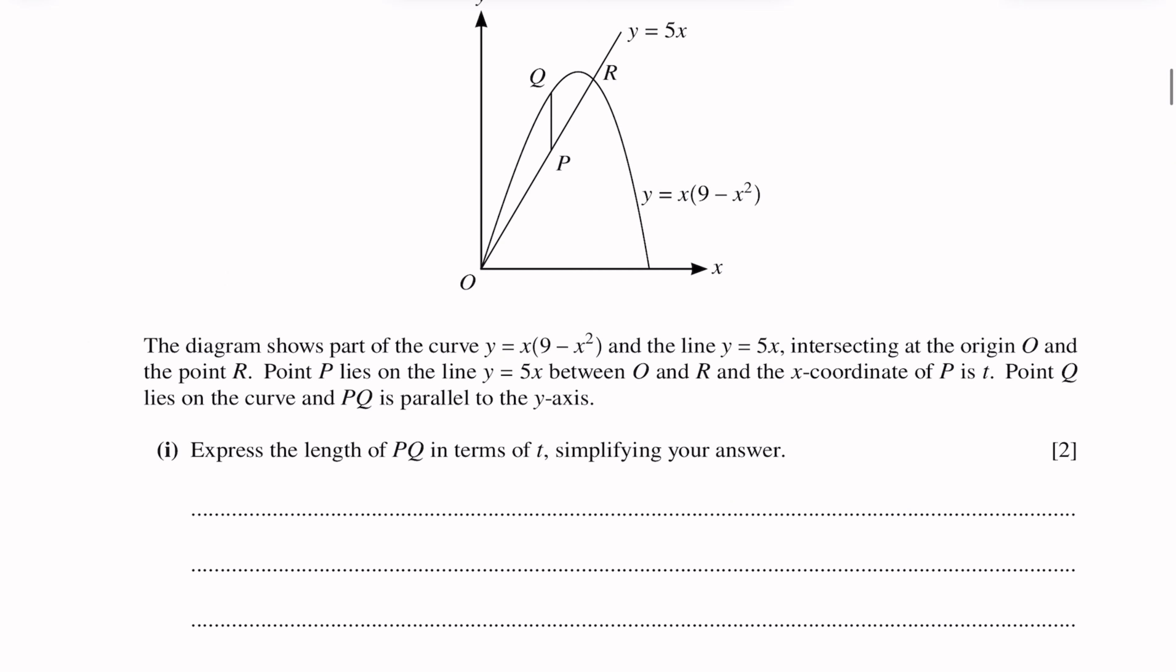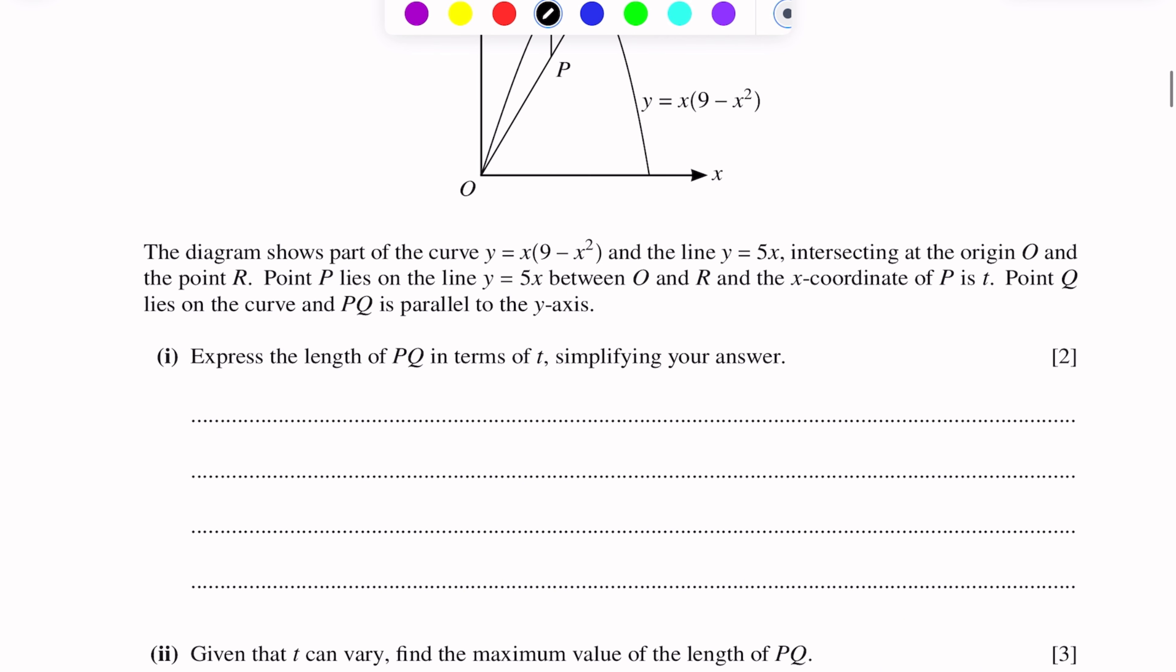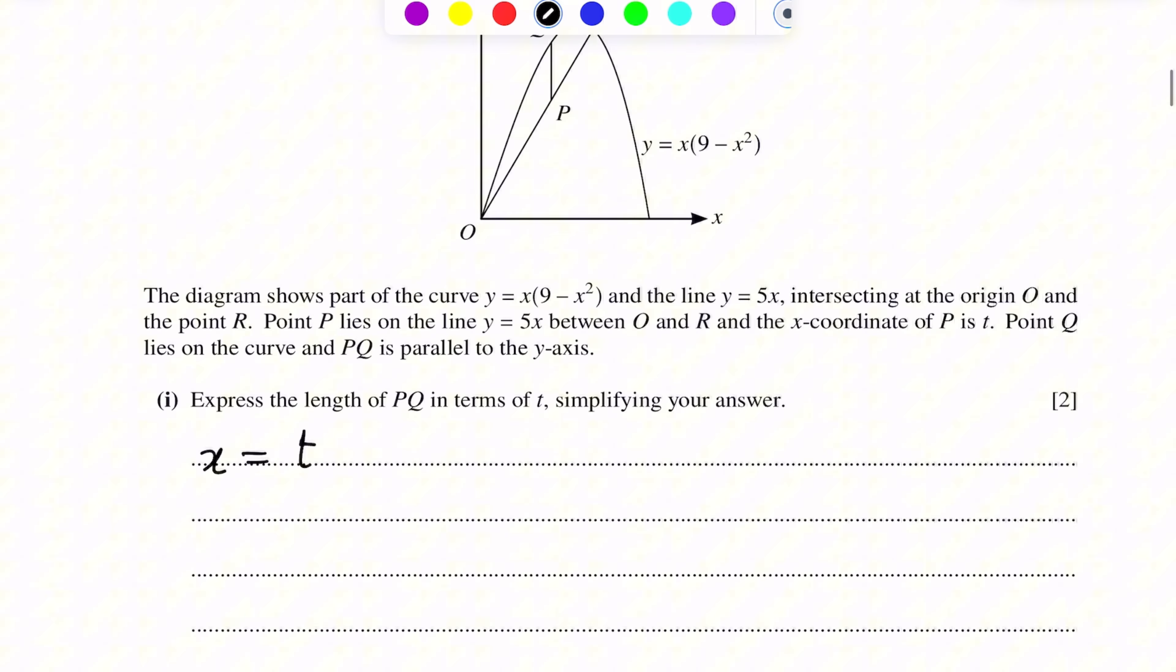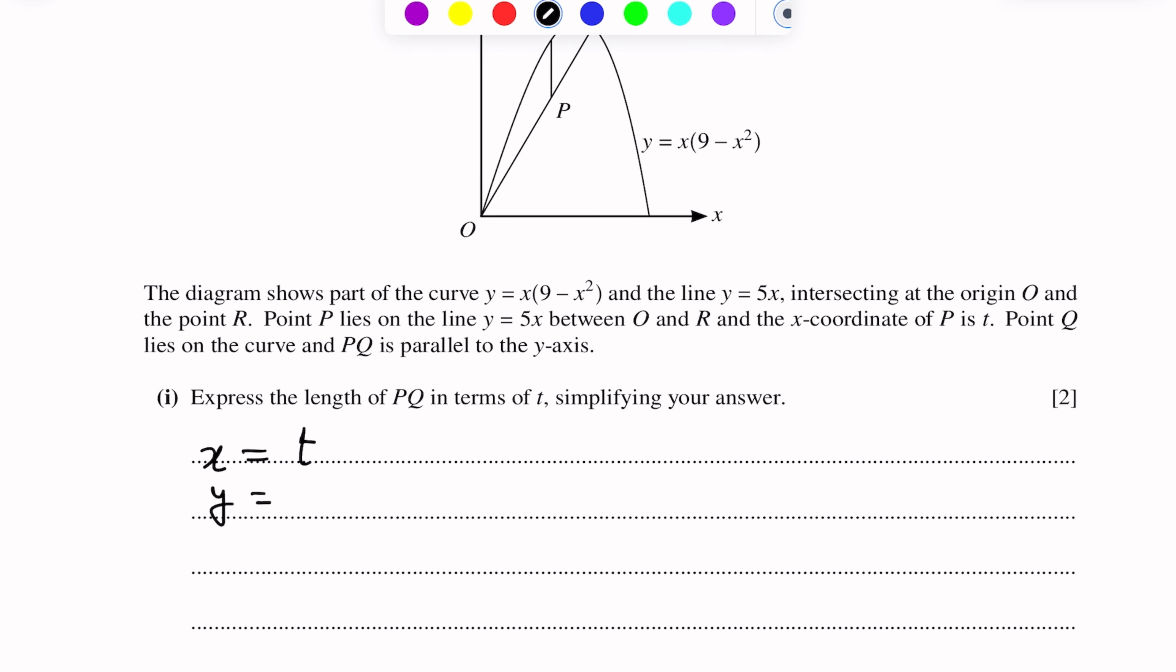First of all, we will find coordinates. X is equal to t for both P and Q. P lies on this line. We'll put the value of x as t to get the y-coordinate, which is 5t. So P's coordinates are t, 5t.